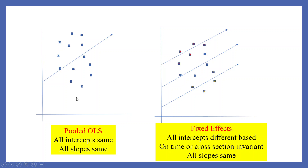Let's understand pooled OLS. There is a single line for all data points — or in other words, one size fits all. All intercepts are the same and all slopes are the same. That is pooled OLS. We have already discussed how to run pooled OLS in R — kindly refer to my previous video on it.